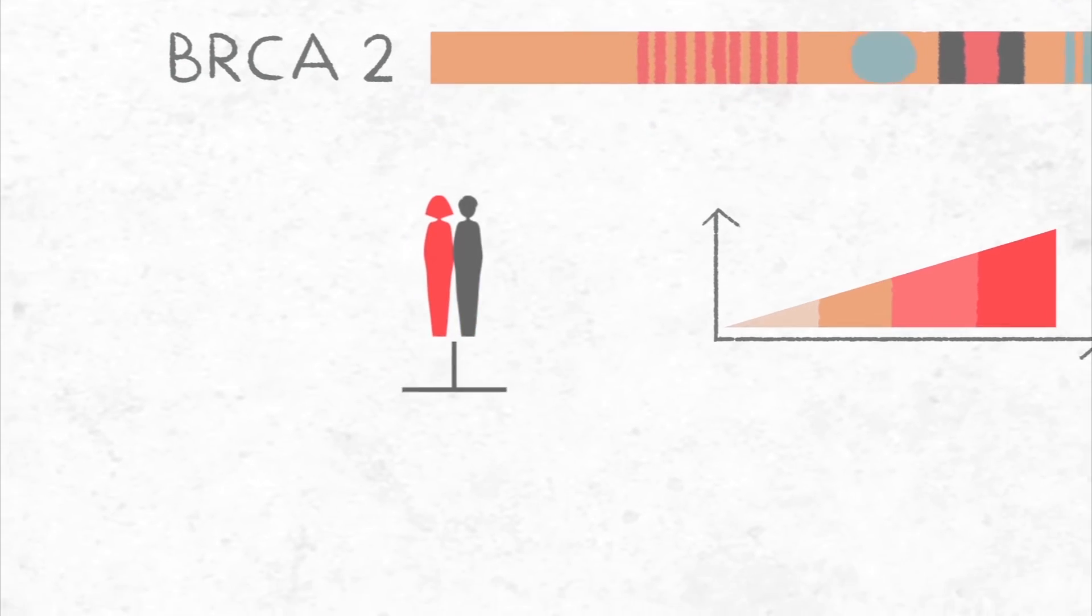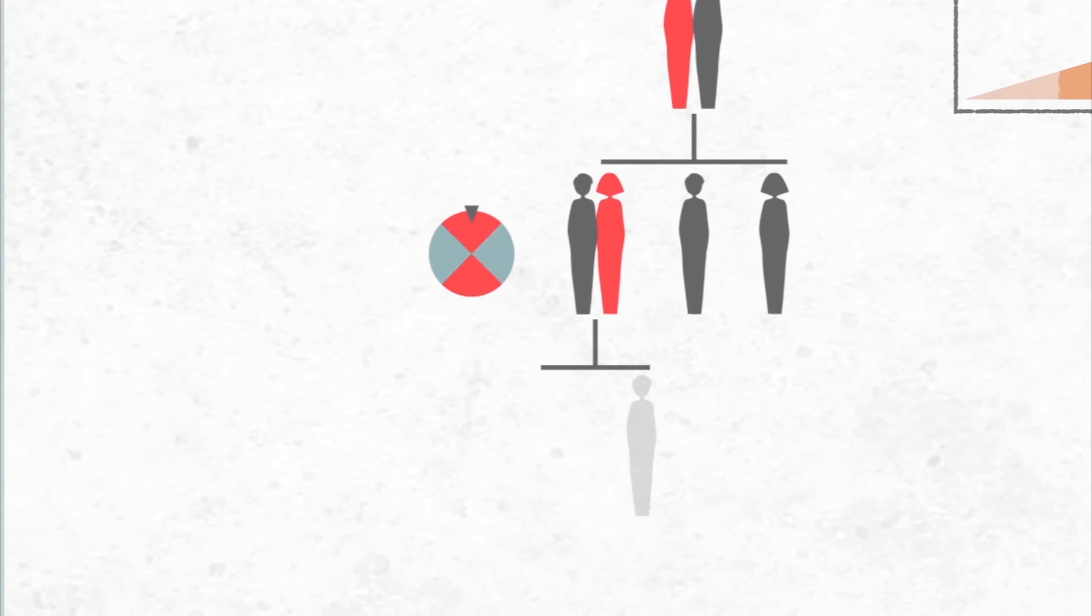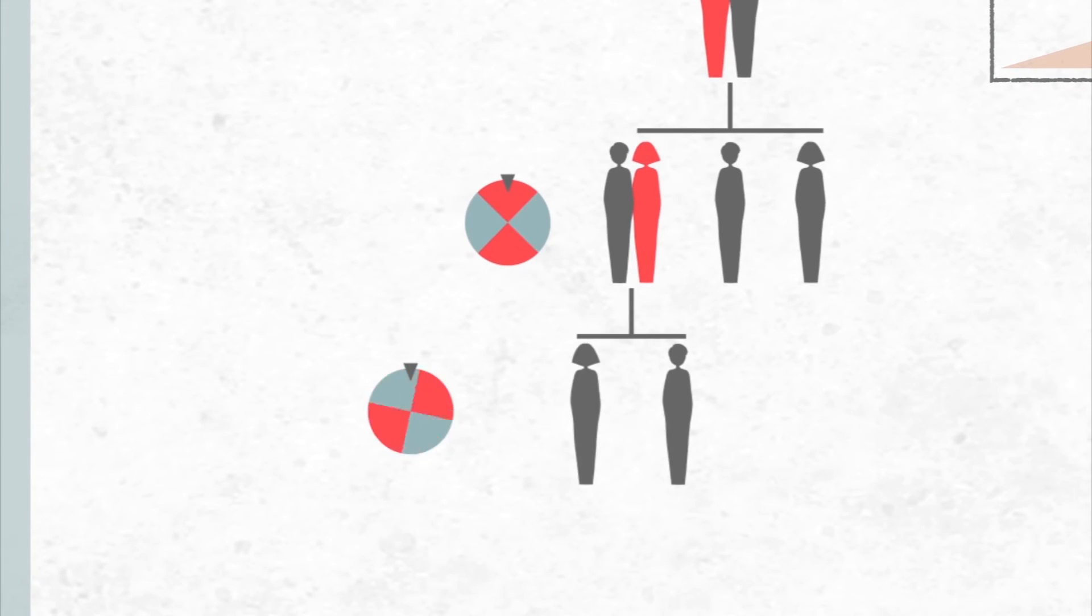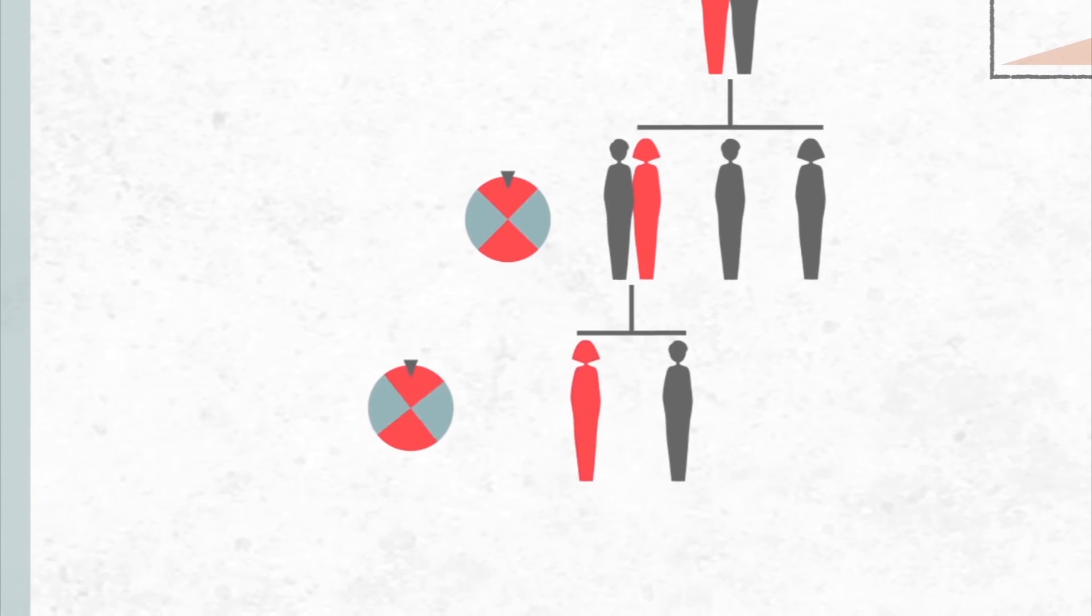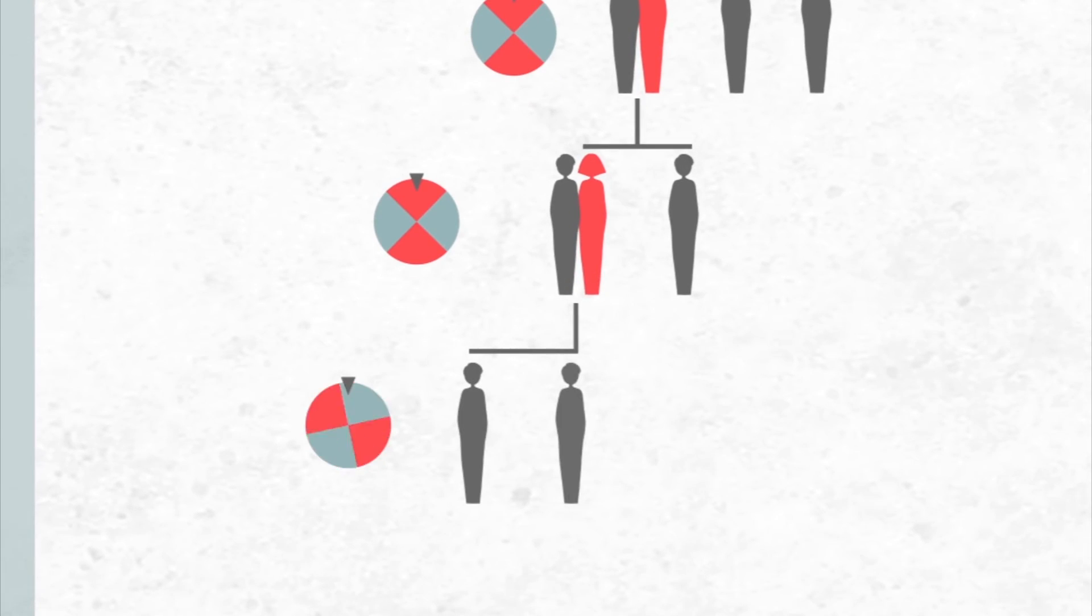A faulty BRCA1 or BRCA2 gene can be passed down from generation to generation just like any other gene. If one of your parents carries a faulty version of the gene, there's a 50% chance that they will pass it on to you. Likewise, if you inherited this single faulty gene, there's a 50% chance that you will pass it on to each child that you have.